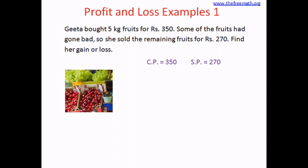You can see that SP is smaller than CP. That means she sold it for less money than she bought it for, so this is definitely a loss. Loss equals CP minus SP. You don't really have to remember what minus what — you just always subtract the smaller number from the bigger number. And because you know the selling price is smaller, you know it's a loss. So 350 minus 270.